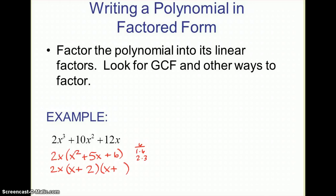2 and 3 will make my 5 in the middle. If I multiply that back out by FOIL, it makes x squared plus 5x plus 6. So in factored form, this polynomial looks like 2x times x plus 2 times x plus 3. So we've got factored form and we've got standard form.